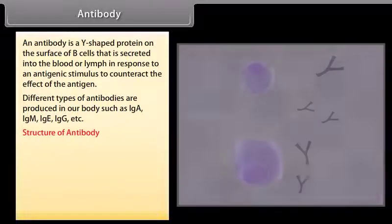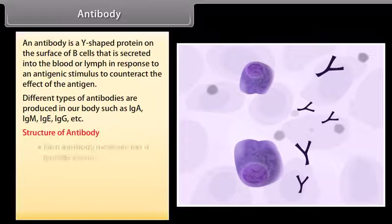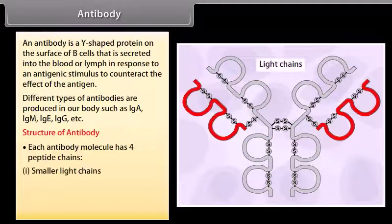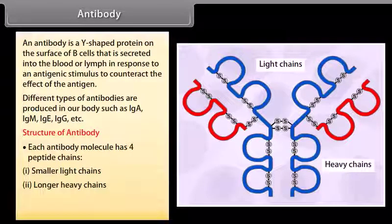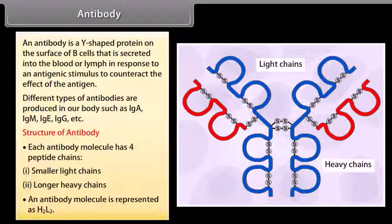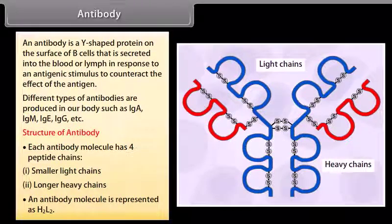Each antibody molecule has four peptide chains: smaller light chains and longer heavy chains. An antibody molecule is represented as H2L2.